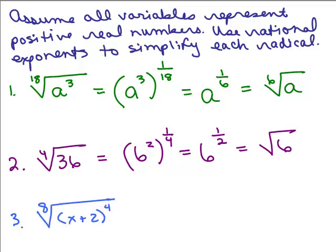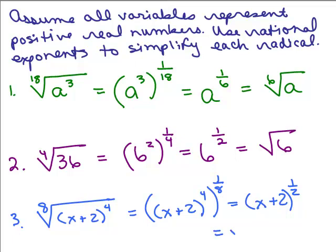We've got the 8th root of x plus 2 to the 4th power. So we have x plus 2 to the 4th power, and then that whole thing is, since it was the 8th root, that is to the 1 eighth power. So when we multiply the exponents, that's 1 half, and what's the easiest way of writing x plus 2 to the 1 half? Square root of x plus 2.